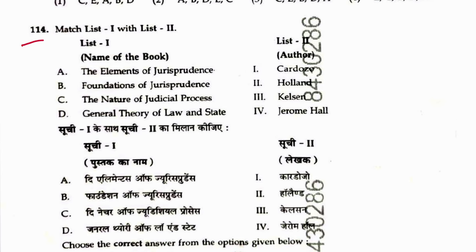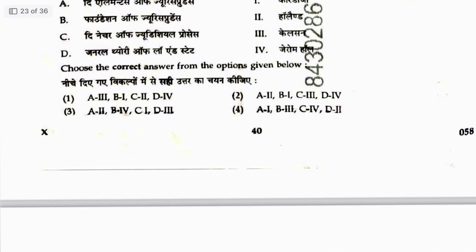Question 114: Match books and authors. Elements of Jurisprudence — Jerome Hall. The Nature of the Judicial Process — Cardozo. General Theory of Law and State — Kelsen. Foundations of Jurisprudence — another author. Sequence is 2, 4, 1, 3. Answer is 3.